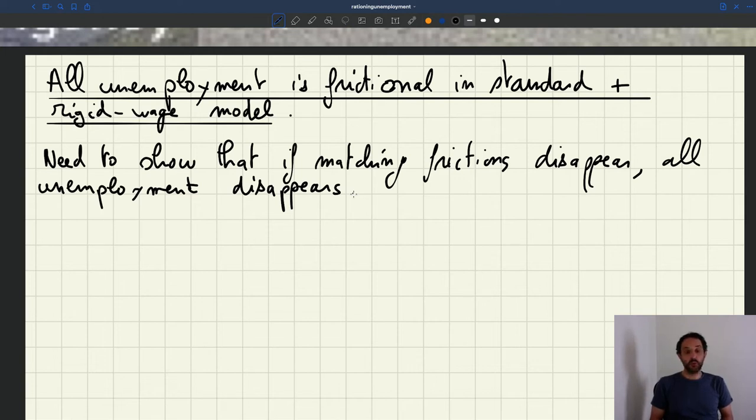If there are no matching frictions, all unemployment disappears. And there are two ways to show that.